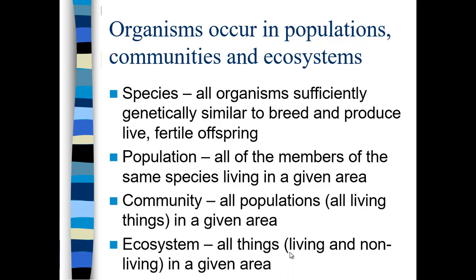A community includes animals, plants, protists, fungi, bacteria, and archaea. Then if we look at all things in a given area — living and non-living, like cars, trees, roads — that makes up the ecosystem. That is the second highest level in the hierarchy of life. The next level is the biosphere, which is all living and non-living things on the habitable portion of Earth. In this class we'll mostly talk about ecosystems.